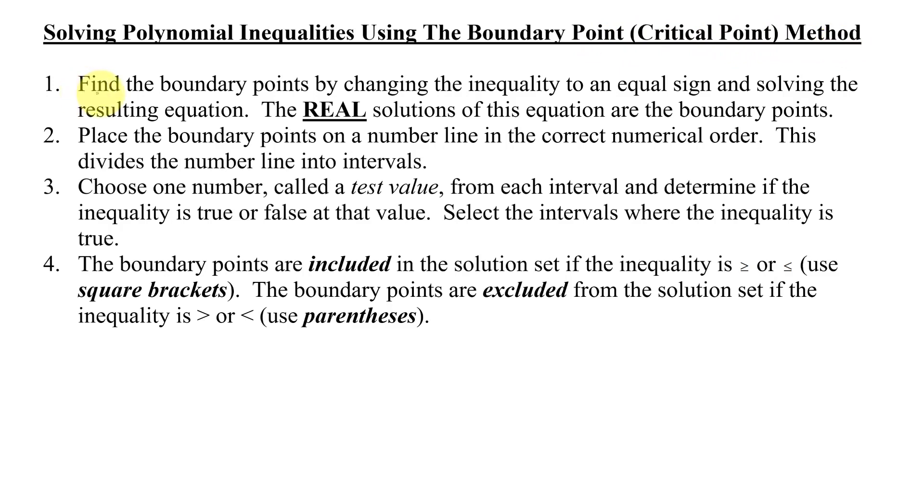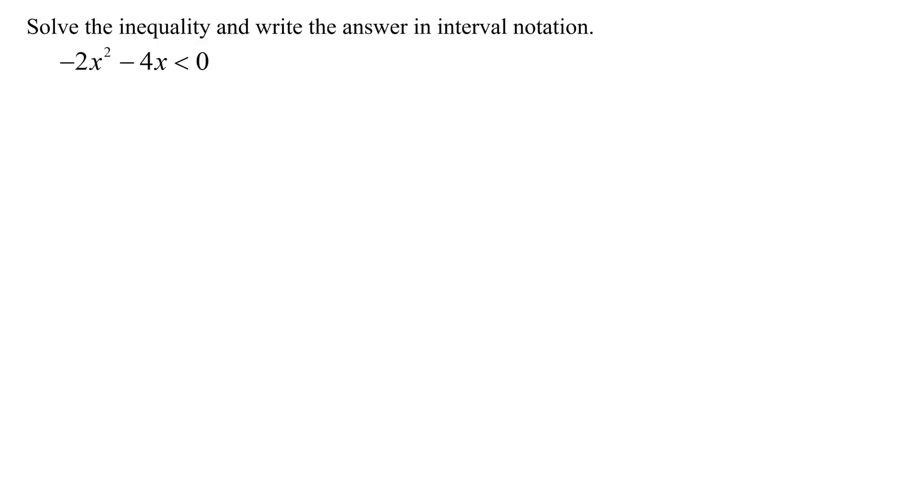Step 1 says find the boundary points by changing the inequality to an equal sign and solving the resulting equation. The real solutions of this equation are the boundary points. So, looking at my problem, I'm going to change this less than to an equal, so I'm going to have negative 2x squared minus 4x equals 0.